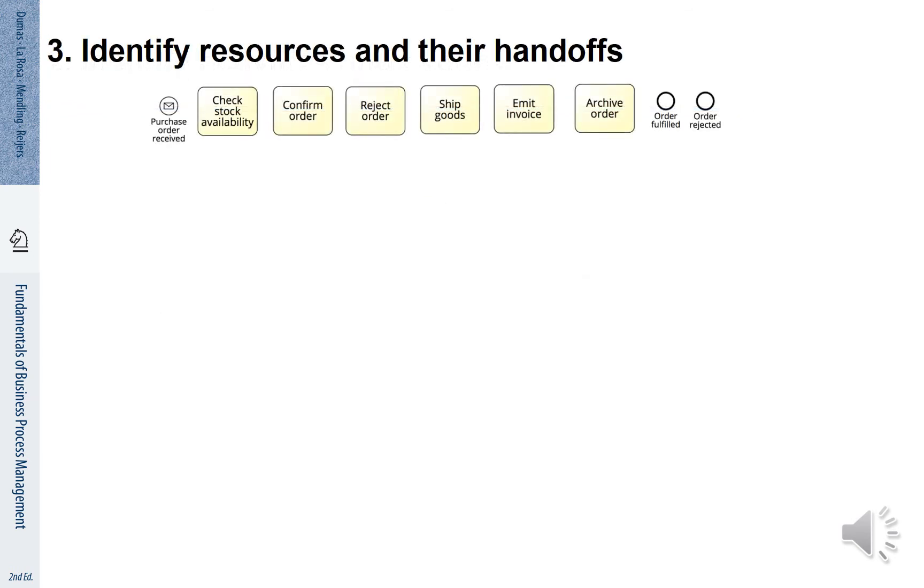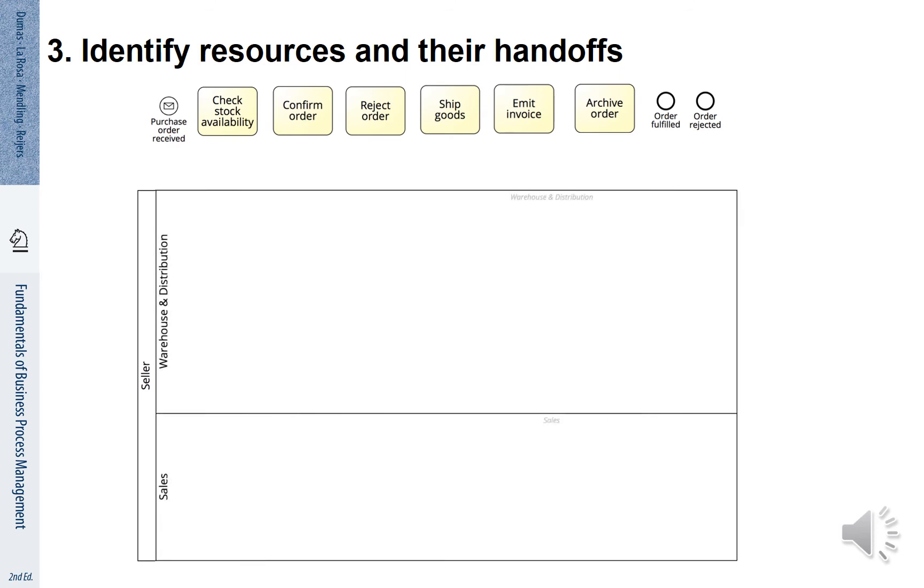Now let us identify the resources and the handoffs for our process. We already stated that we assume the perspective of the seller. The selling company is subdivided into different participants. There is a sales department and the warehouse and distribution department. The latter being subdivided into the warehouse staff and the ERP system that conducts certain steps automatically.